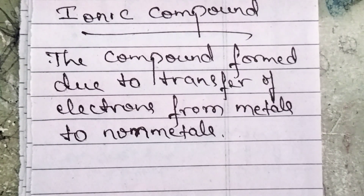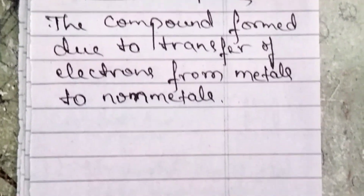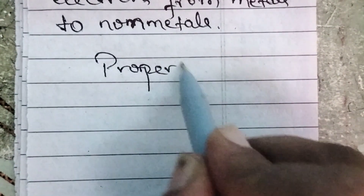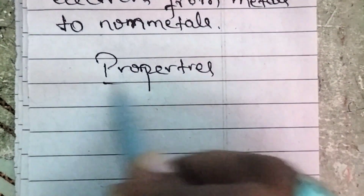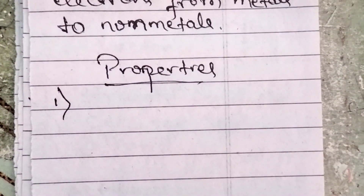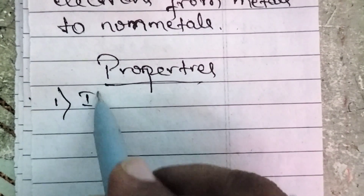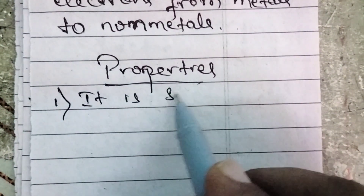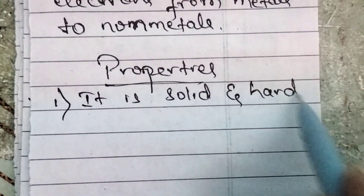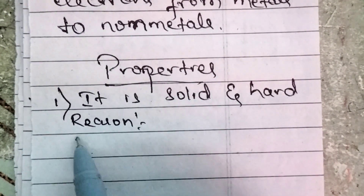Now let us look at the properties of ionic compounds. The first property of ionic compounds: it is solid and hard. Ionic compounds are solid and hard. This is very important for the examination.